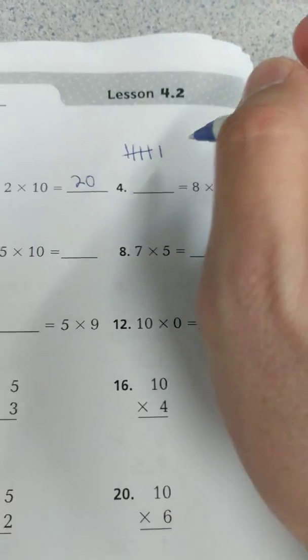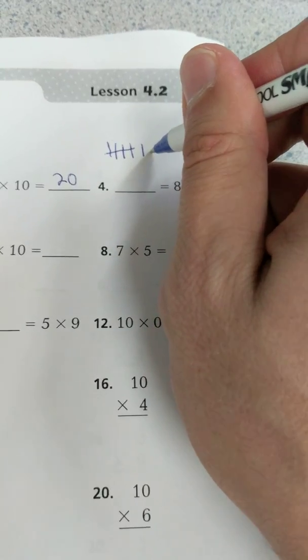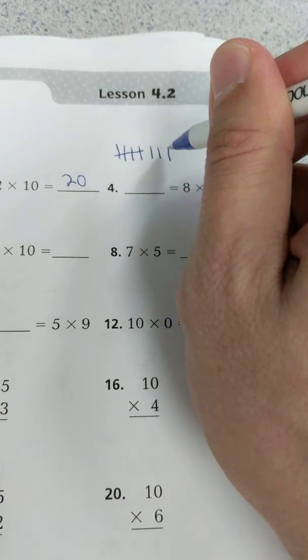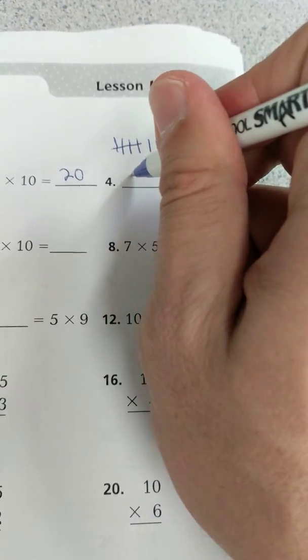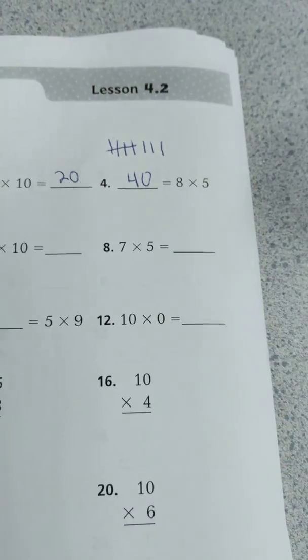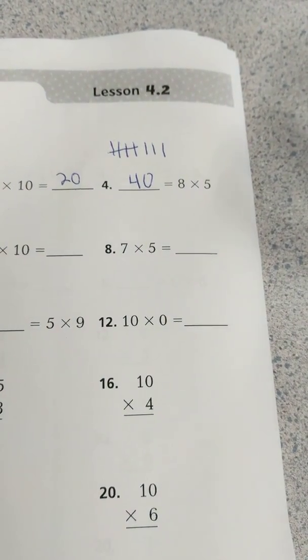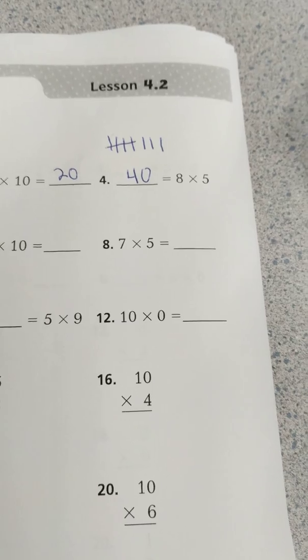25, 30. So I got 6 so far. 35, 40. So now I have 8 tally marks, and that was 40. So that's a way that we can count by 5s to find the answer there.